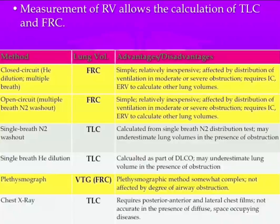Don't get caught up in the open circuit versus closed circuit distinction — we'll talk more about that in class. You can measure your FRC. With single breath nitrogen washout, you can do total lung capacity. Single breath helium also gives you total lung capacity. With plethysmography, you can measure your total thoracic gas volume, including air that is obstructed — that's key, because it's the most accurate.